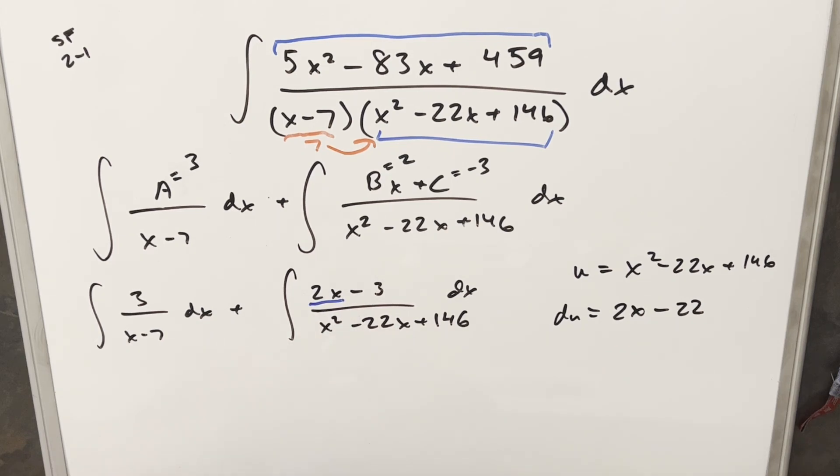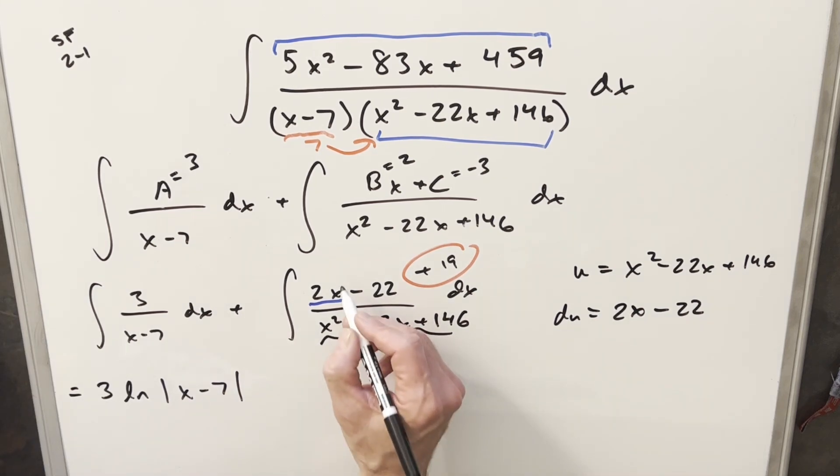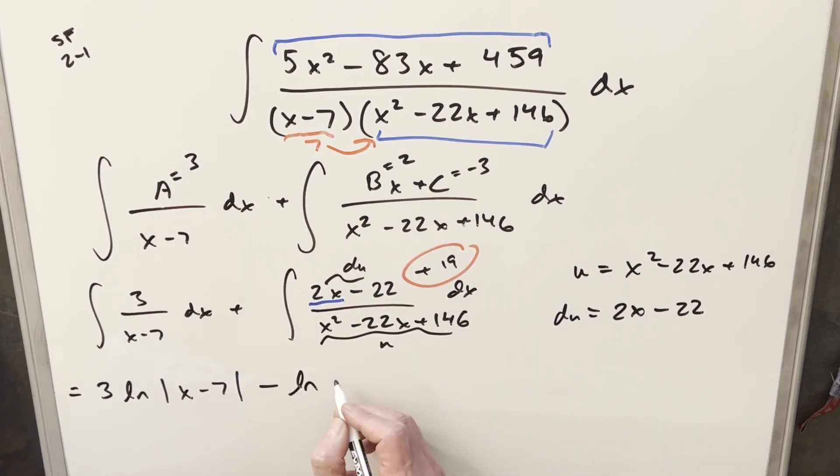Now we have the 2x here. I want the minus 22, so I'm just going to kind of force this. What I can do is for minus 3, I can write that as minus 22 plus 19. So this is still minus 3. I just don't want to forget. We're going to have to break this off into a separate integral. But now this integral is perfectly set up. So we'll just integrate this first one, because this is easy. So this is going to be 3 times natural log absolute value x minus 7. Now for this one, I'm not going to do the u substitution formally. We have our u here, and we have our du here. So this is just du over u. So this is going to give me minus natural log absolute value u, but we have our u value right there, which is x squared minus 22x plus 146. But we're going to have this third integral.